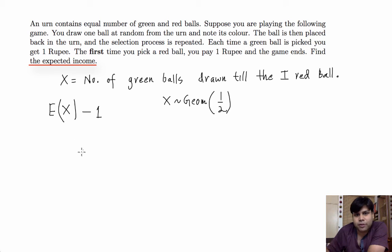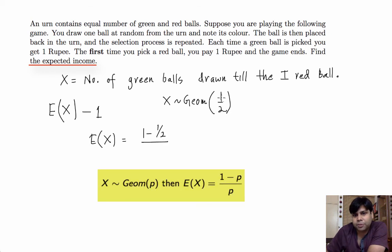What is expected value of X? Expected value of X is simply 1 minus half, so basically (1 minus p) upon p. So that is 1. You are going to get 1.